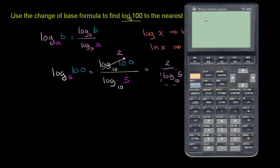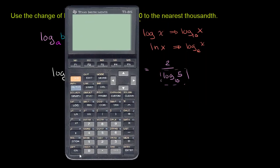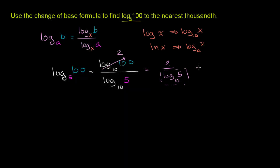Let's get our calculator out. We want 2 divided by log of 5. When someone just writes log they mean base 10; if they press ln, that means base e. So log without any other information is log base 10 of 5. The result, to the nearest thousandth, is 2.861. So log base 5 of 100 is approximately equal to 2.861.